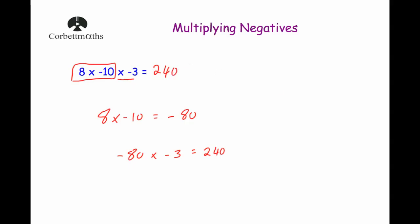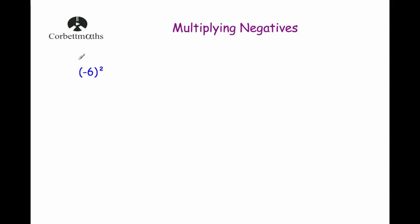Our last example is squaring a negative — we've got negative 6 squared. Remember, squared means multiplied by itself, so this means negative 6 multiplied by negative 6. It's a negative times a negative, so that's a positive. And 6 times 6 is 36, so the answer is 36. If you're ever squaring a negative number, the answer will always be positive.